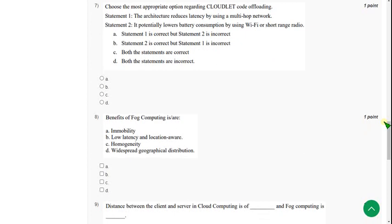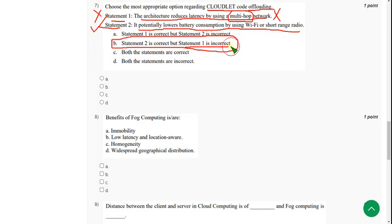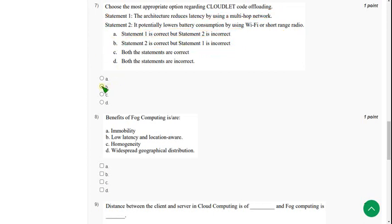For the seventh question, they are asking which statements are correct regarding cloudlet code offloading. Statement one — the architecture reduces latency by using a multi-hop network — is absolutely false, because it uses a single hop, not multi-hop. Statement two — it potentially lowers battery consumption by using WiFi or short-range radio — is a correct statement. So the answer is option B: statement 2 is correct but statement 1 is incorrect. Mark option B.